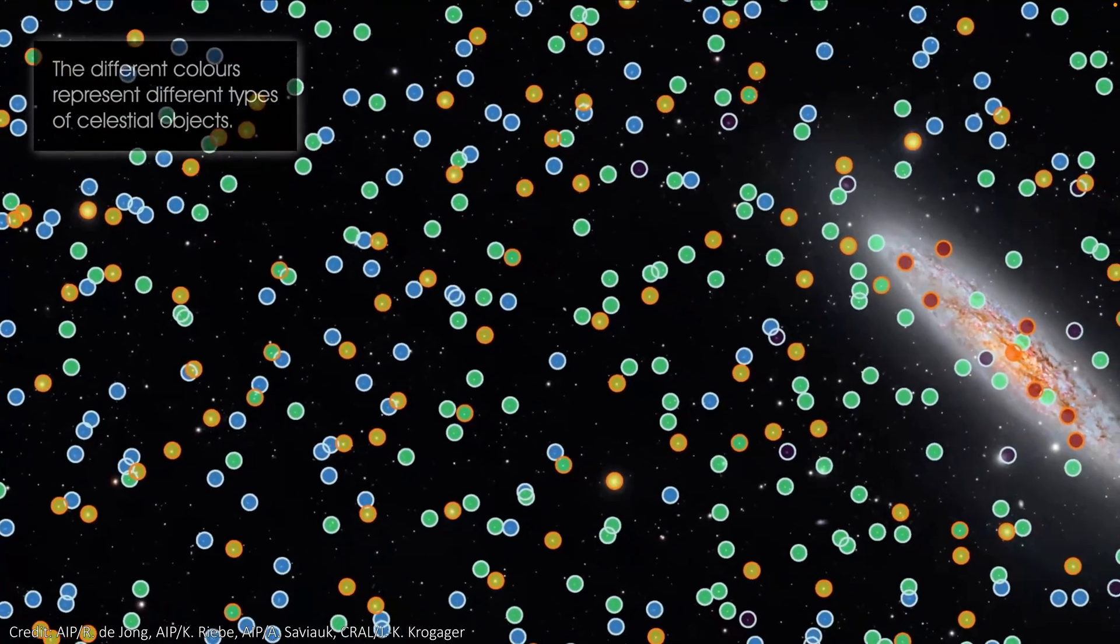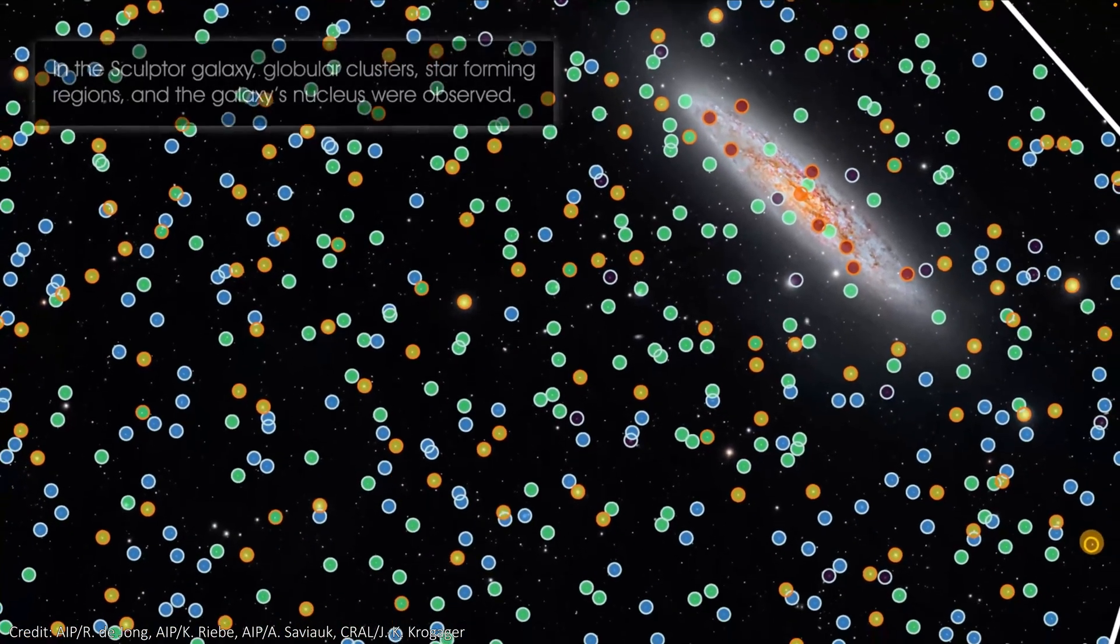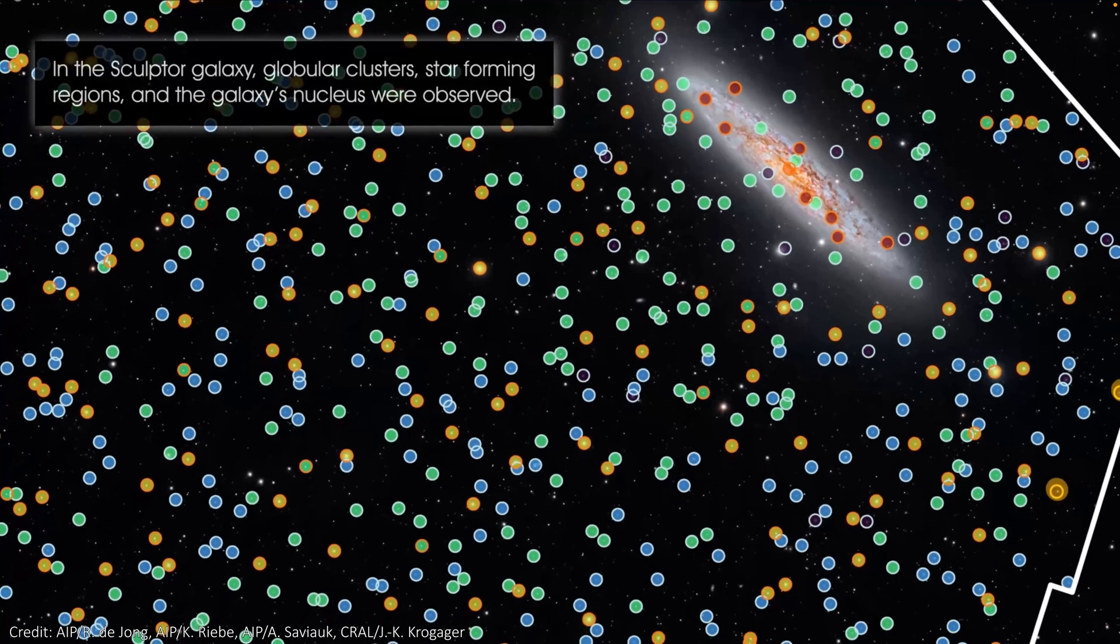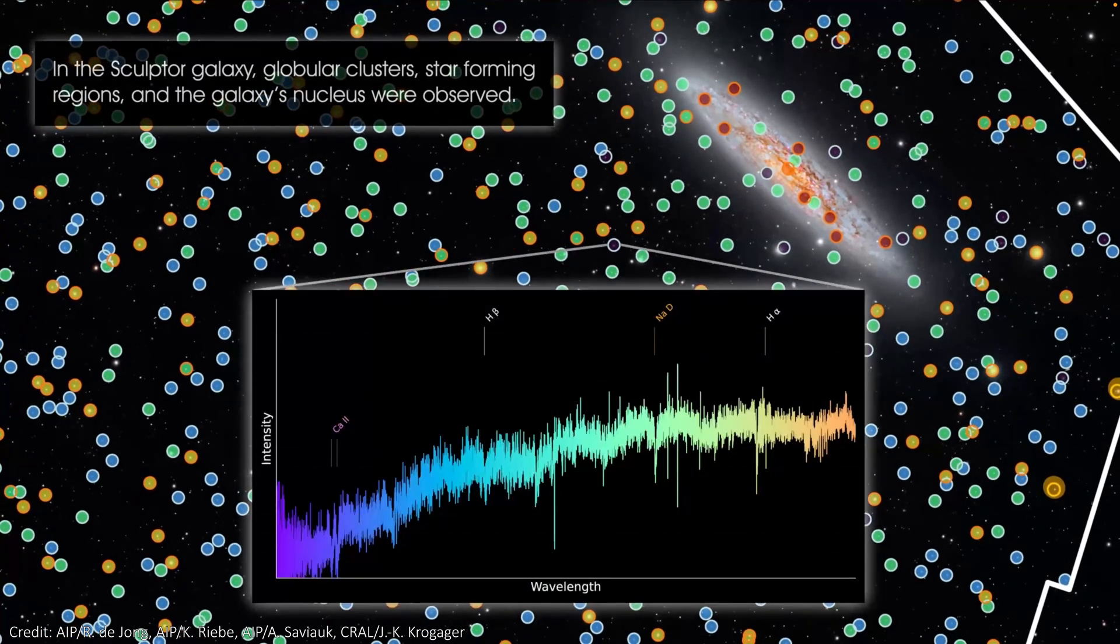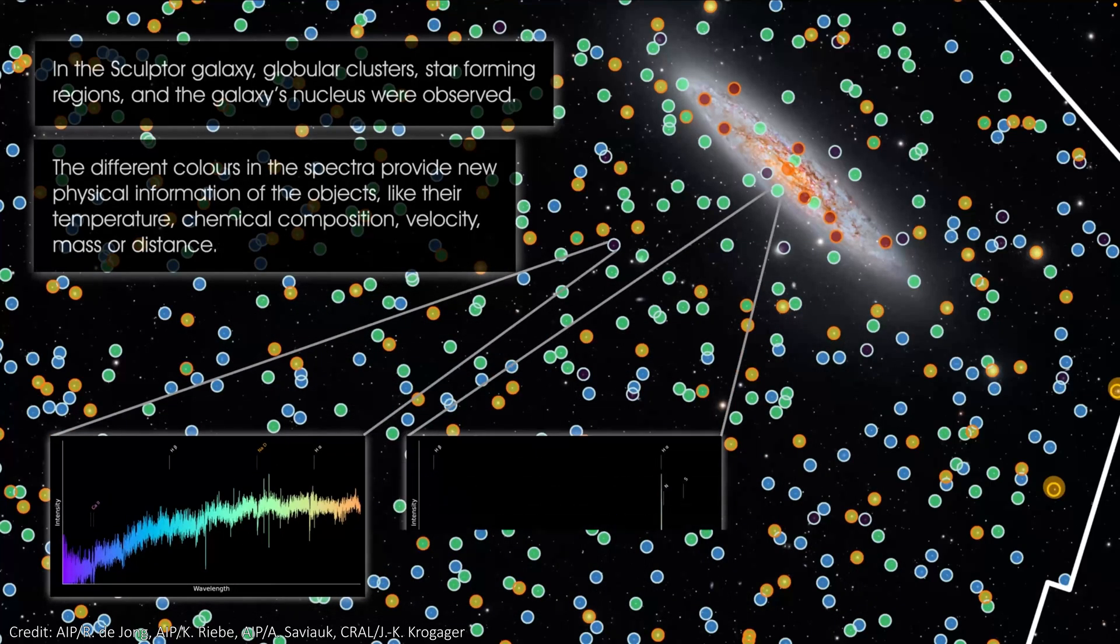The Sculptor Galaxy does dominate the image, and Foremost observation also captured a super star cluster, various hot and cold stars and their movements, and gas glowing from newly formed stars in that galaxy.